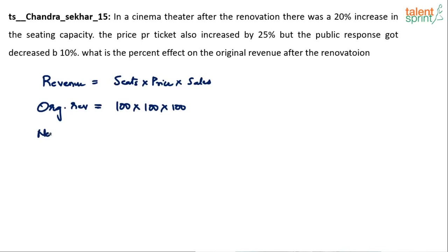What will be the new revenue? After the renovation — this is post renovation, this is pre renovation — there was a 20% increase in the seating capacity, meaning now the number of seats is 120. The price per ticket also increased by 25%, so what earlier cost 100 rupees will now cost 125 rupees.